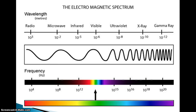Filling in the spectrum: gamma rays are the shortest waves, with a wavelength on the order of 10 to the negative 12th power — that is 12 decimal places over. Gamma rays have the highest frequency, whereas radio waves are the longest waves with the lowest frequency. On the chart, frequency is higher toward the right. Radio waves have very long wavelengths.